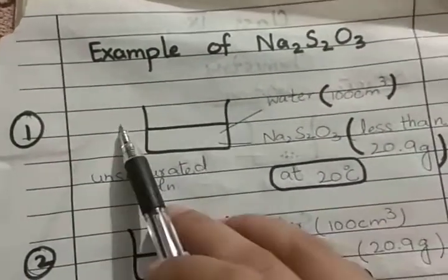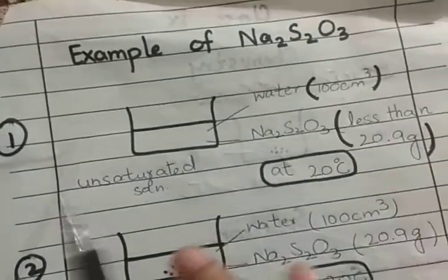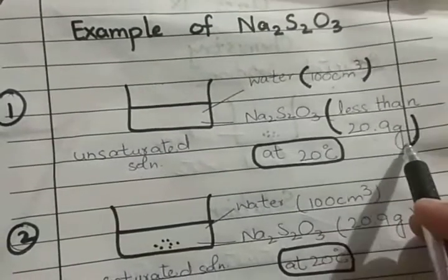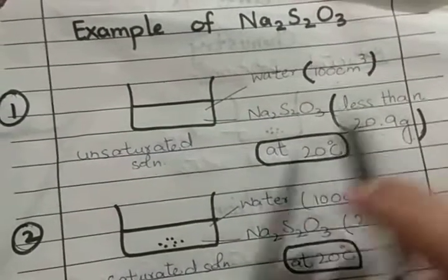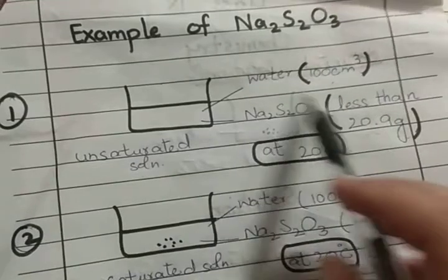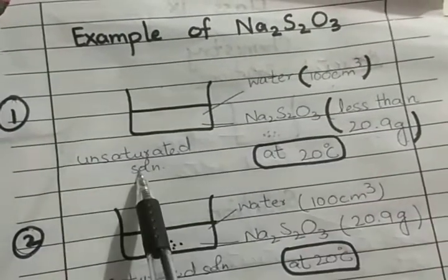Example using sodium thiosulfate (Na₂S₂O₃): for the unsaturated solution, we take 100 cm³ of water as solvent and add less than 20.9 grams of sodium thiosulfate as solute. At 20°C, the sodium thiosulfate dissolves completely, giving us an unsaturated solution.